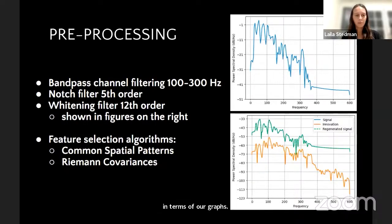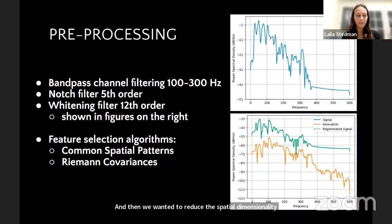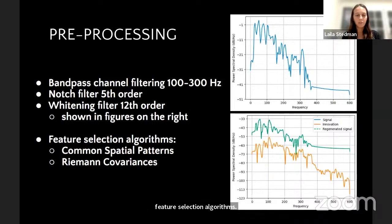Before we even did our feature selection, we were able to remove any of the triggered data and extract that. Then we were able to epoch our data as well. We then wanted to reduce the spatial dimensionality of the data and use our feature reduction and feature selection algorithms, so we tried a couple of those.